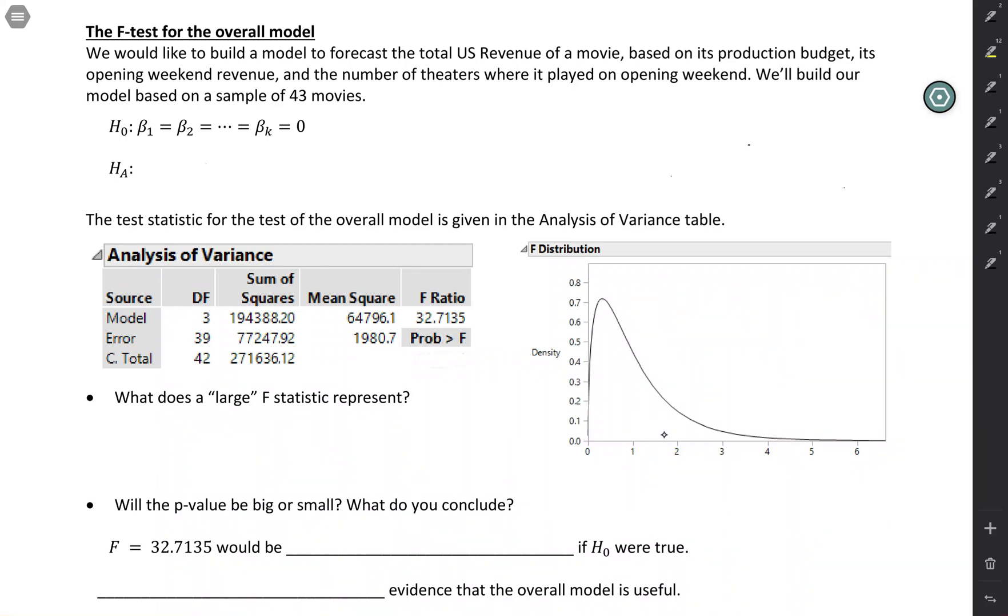In multiple regression there's two different types of inference. There's the F test for the overall model, and then there are t-tests that are used for the individual predictors.